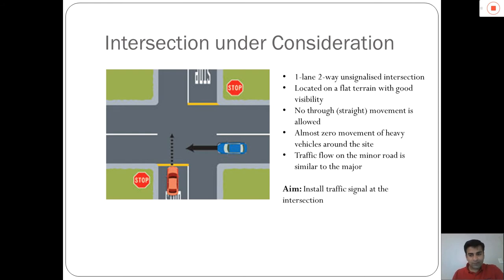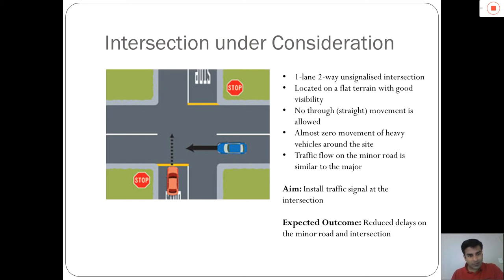The aim of this case study is to install a traffic signal at this intersection, which would lead to reduced delays on the minor road as well as the overall intersection. In the current situation, the red car on the minor road has to wait and give way to the blue car traveling on the major stream, leading to increased delays. Installing a traffic signal will reduce the delays experienced by vehicles on the minor stream.